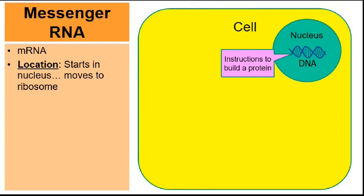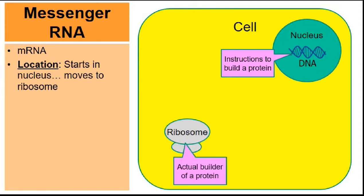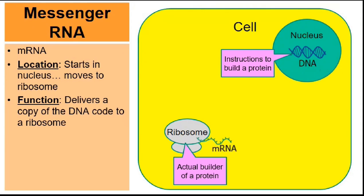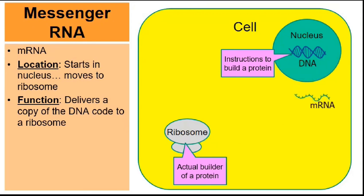And then the third part of a nucleotide is the nitrogen base. In RNA, the nitrogen base might be A for adenine, G for guanine, C for cytosine, or U for uracil. These are the four nucleotide nitrogen bases of RNA. And ultimately, we're going to learn about the three kinds of RNA: mRNA, tRNA, and rRNA.